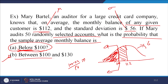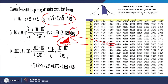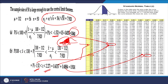Now for part b, what is the probability that the monthly balance is between 100 and 130? Calculate Z values: Z₁ = -1.52 and Z₂ = 2.27. For Z = 1.52, the area is 0.4357, and for Z = 2.27, the area is 0.4884. We add these two areas because we want the total area from 100 to 130 spanning both sides of the mean at 112.